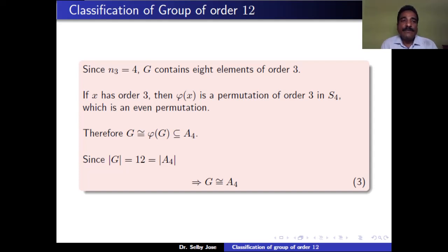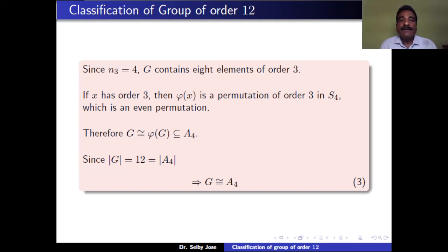Also, since N3 = 4, G contains 8 elements of order 3. If x has order 3, then φ(x) is a permutation of order 3 in S4, which is an even permutation. Therefore G ≅ φ(G), and every element of φ(G) is contained in A4. Since |G| = |A4| = 12, we conclude G is isomorphic to A4.